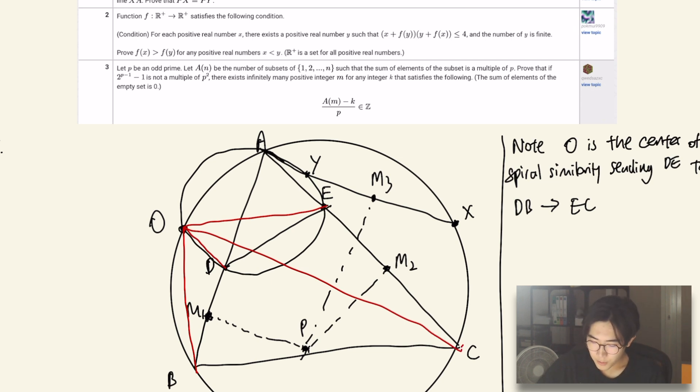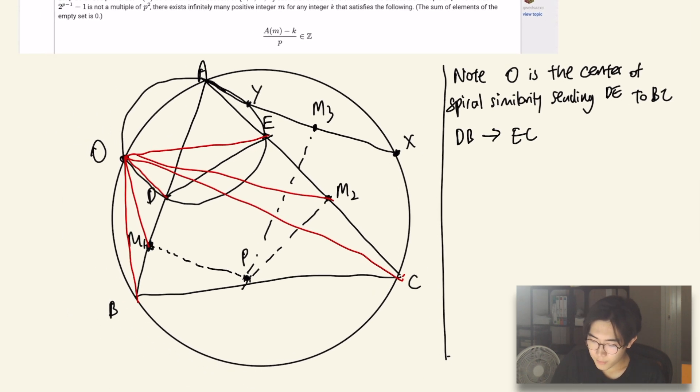Then by the virtue of the fact that M1 is the midpoint of BD and M2 is the midpoint of EC, the triangle OM1D must be similar to the triangle OM2D, which means that O is also the center of the spiral similarity sending DE to M1M2, which then implies that we have O, M1, M2, A is cyclic.